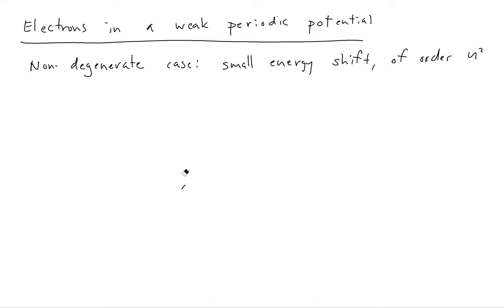In this mini-lecture we're going to talk about the degenerate case. You might recall from perturbation theory that interesting things can happen when you have degenerate energy eigenvalues. When you include a perturbation, one expects that it will lift the degeneracy between the eigenvalues and create some sort of a gap or avoided crossing in the spectrum. That's exactly what happens for electrons in a lattice — this is the scenario in which energy gaps can occur.